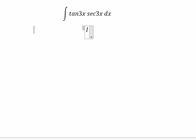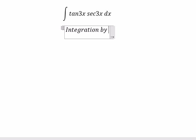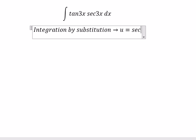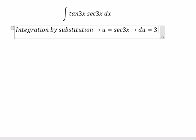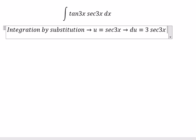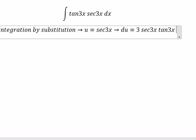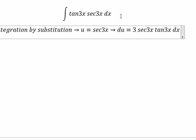We need to use integration by substitution. We put u equal to sec 3x, so du equals 3 sec 3x tan 3x dx. We divide both sides by 3.